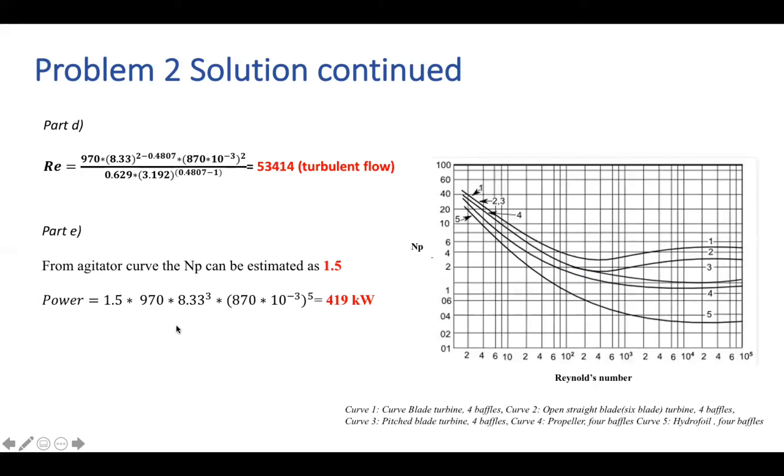Now on to problem part D for problem number two. So we were more interested in being able to calculate your flow regime. And in this case, we were able to realize that you have a turbulent flow pattern in your tank. So once you're able to plug in all the necessary variables, so you plug in your density, plug in your K, your N values, your Ks values that you solved in problem number one, you get a Reynolds number of around 53,000. So once you're able to pinpoint that value approximately on your agitator curve seen on the right, you should then get that your power number Np is estimated to be around 1.5 roughly. So once you have now that power number, you can simply plug that into your power equation. So for your P, that would be 1.5 times 970 times 8.33 times 870 raised to the fifth power. And that will give you a power of around 419 kilowatts.